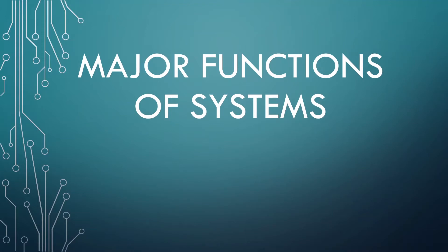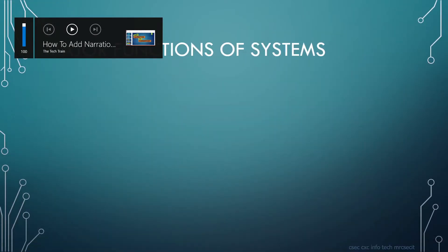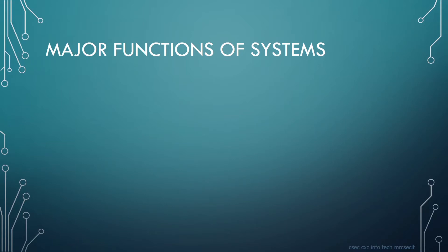Major functions of systems: describe a general-purpose computer system. Major functions of systems include input, processing, output, and storage.